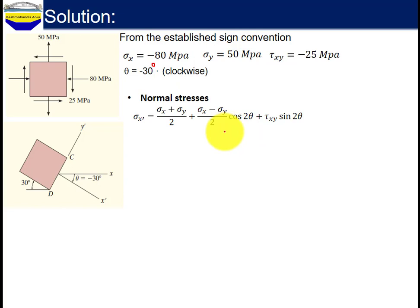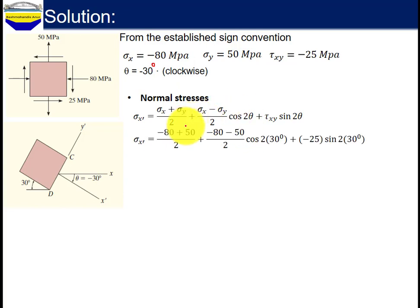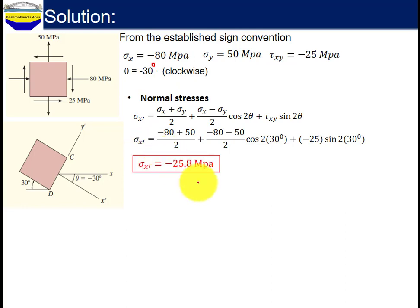Everything is given here. Substituting the values, sigma x-prime equals to negative 25.8 MPa.